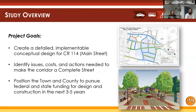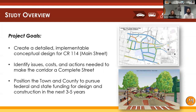The study goals included: first, to create a detailed implementable concept design for Main Street — a next step from the 2017 Arlington Town Center pedestrian plan, taking that vision and seeing what could be implemented given the current right-of-way. Another goal is to identify issues, costs, and actions needed to make this corridor a complete street — one that accommodates multiple modes: vehicular, pedestrian, transit, and bicycling. The third goal is to position the town and county to pursue federal and state funding for design and construction over the next three to five years.